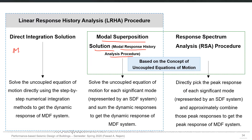Our target is to solve the equation: mass matrix times ü vector plus damping matrix times u̇ vector plus K matrix times u vector equals the applied loading. For the earthquake response case, this becomes minus the mass matrix times the influence vector times üg, which is the ground acceleration function. The first solution method uses numerical integration technique to solve this coupled matrix equation simultaneously using step-by-step numerical integration.